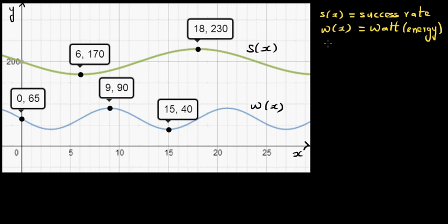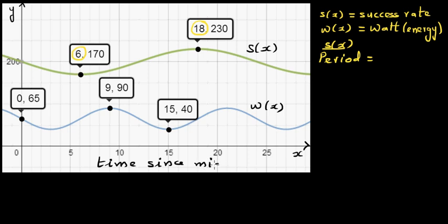For S of X, let's first look at the period. You know half the period from the maximum and minimum. They are starting at 6 a.m. and this is 6 p.m. — this is time since midnight. So half a cycle is 12 hours, meaning one full period is 24 hours.